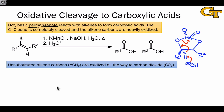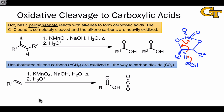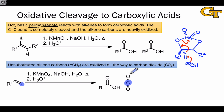Unsubstituted alkene carbons — for example, in which R1 or R2 is a hydrogen atom, such as we see at this carbon in this alkene substrate — form carbon dioxide under these conditions. Both hydrogens in this CH2 group can be eliminated to form two double bonds to oxygen.